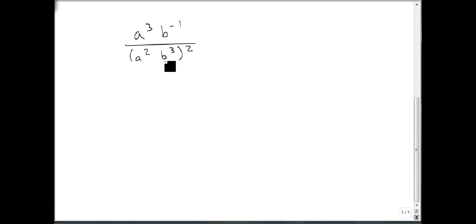Well, we're going to start with the bottom, because that's the more complicated piece. And we're going to get rid of our parentheses first by distributing the square through. So on top, we still have a cubed b to the minus one. But on bottom, we now get a to the fourth b to the sixth.